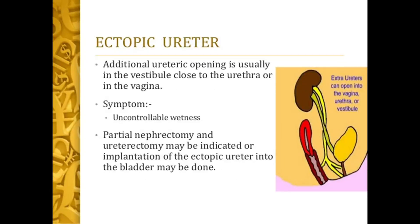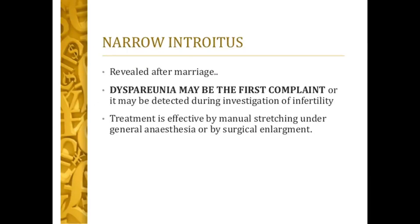Ectopic ureter: in addition to the normal ureteric opening, the ectopic opening is usually through the vestibule close to the urethra or in the vagina. The symptom is uncontrollable wetness. Ipsilateral nephrectomy and ureterectomy may be indicated, or implantation of the ectopic ureter into the bladder may be done.